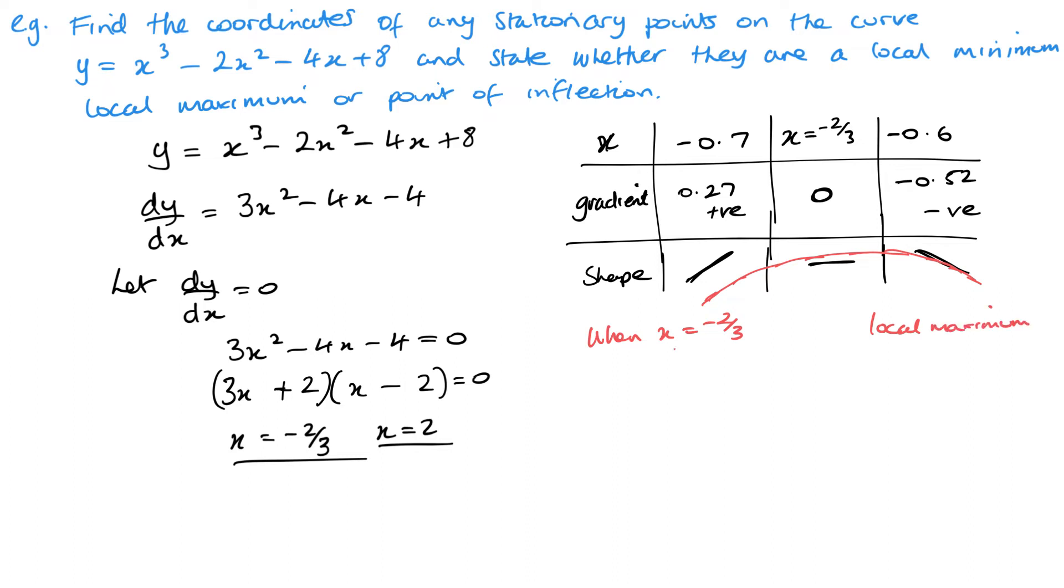Now I can actually also substitute that into y and get the actual full coordinates. Now I want to do the same kind of thing now just with my other one. So we know this one's x = 2. So let's just go either side of that: we'll go 2.1 and 1.9. And again we want to look at the gradient and the shape.